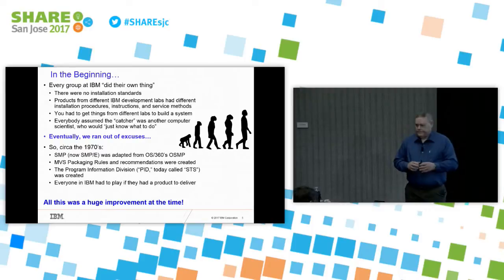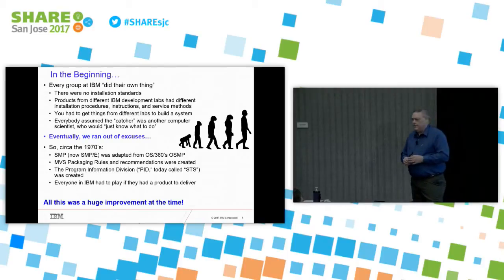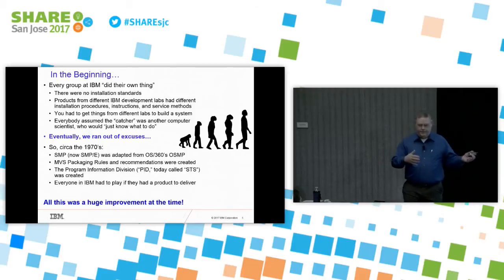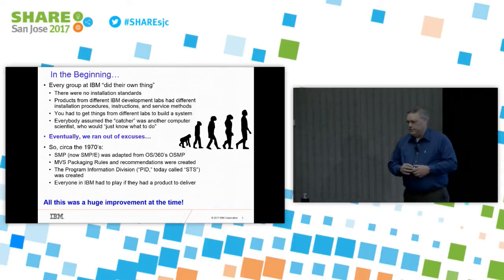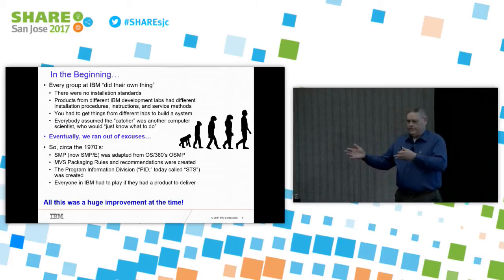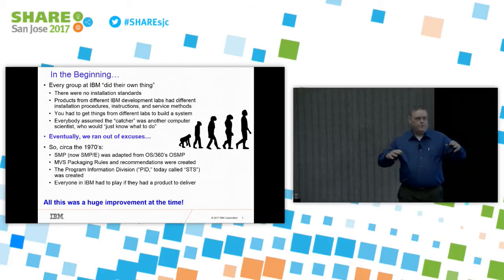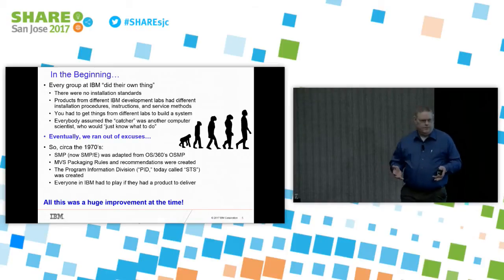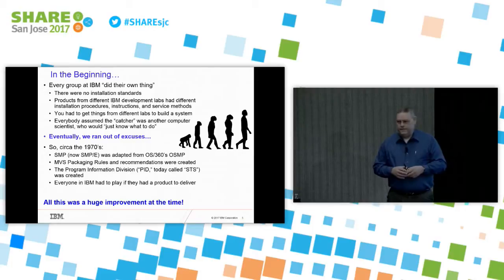Eventually, as sometimes happens, we ran out of excuses. So we said we need to have a common service tool. We adapted System 360's OSMP into this thing called SMP, and later SMP-4, and it evolved into SMP-E. We instituted packaging rules to say when you package a product, you will do it this way — SMP-packaged, following these rules. We formed this division called the Program Information Division. Just in case you've ever wondered what PID stood for originally — it hasn't existed as the name of an IBM division since the early to mid-1970s, but we still call it PID.